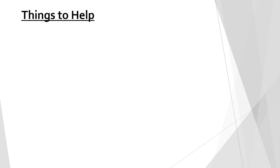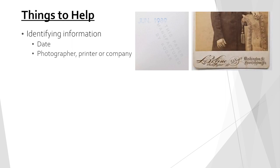First we will outline a few things that can help with the identification process. Sometimes the photograph will have identifying information such as the print date or the photographic company on it. A date can help you narrow down the type of photograph based on when they were produced. A photographer, printer, or company name can provide a starting point for research. And if you're very lucky, the method or photography type used might even be printed on the photograph itself.